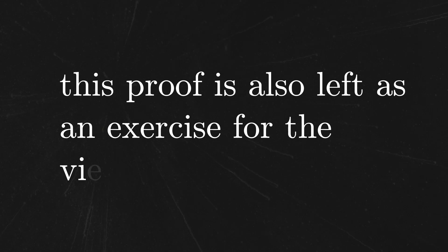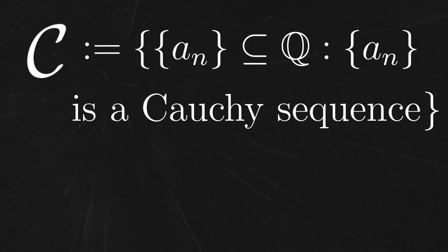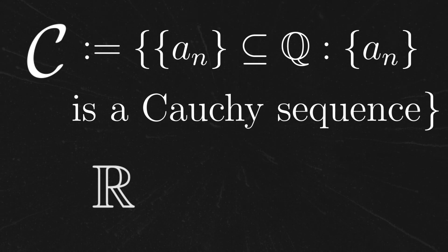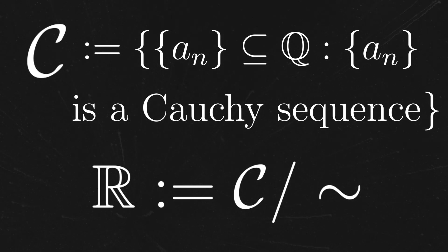First, create the set C of all Cauchy sequences of rational numbers. Then, we define the real numbers to be the quotient of C by the aforementioned equivalence relation. For those of you less familiar with some of these fancy words, all this means is that we're formally treating Cauchy sequences whose differences tend to zero to represent the same thing. And there we have it!